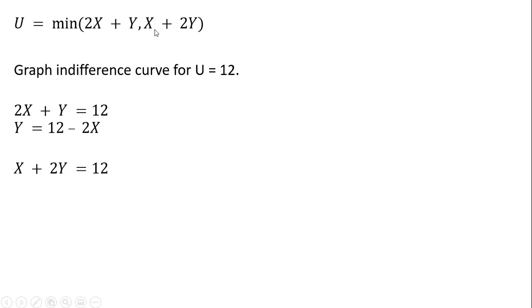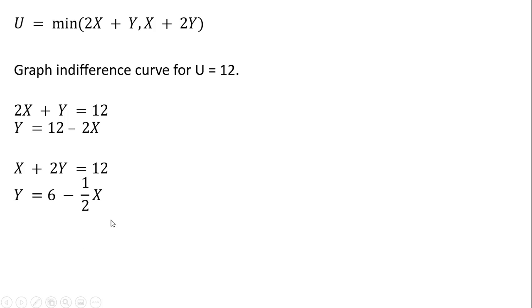Next, we're going to take this second term in parentheses, set that equal to 12, and once again solve for y. Dividing through by 2 and solving for y, we get the following result: y equals 6 minus one-half x.